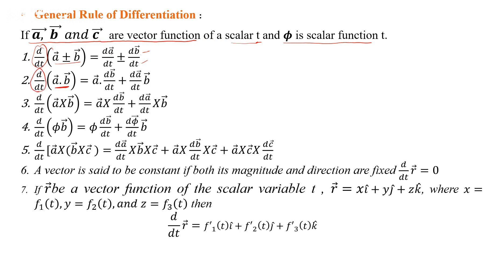For the dot product of two vectors, we follow the product rule: d/dt(a·b) = a·(db/dt) + (da/dt)·b. For the cross product of two vector functions a and b, we write d/dt(a × b) = a × (db/dt) + (da/dt) × b, preserving the same order as given.